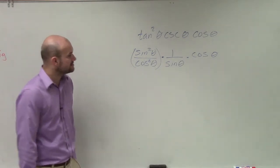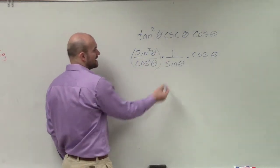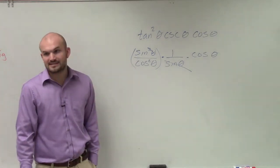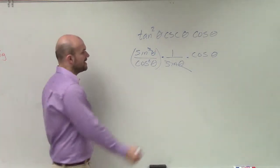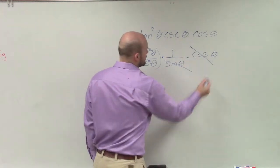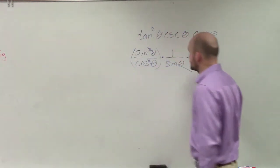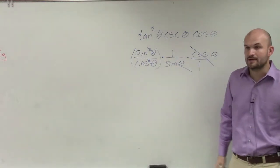Now, when we go ahead and simplify this, you guys can see that the sine squared and the sine, that eliminates out, right? When I have this cosine, those are going to multiply out because that's a cosine in the numerator over cosine in the denominator.